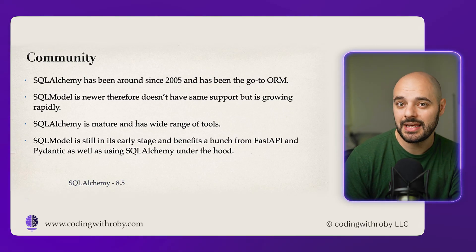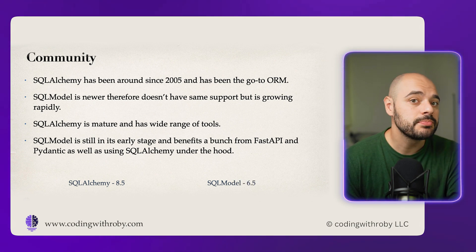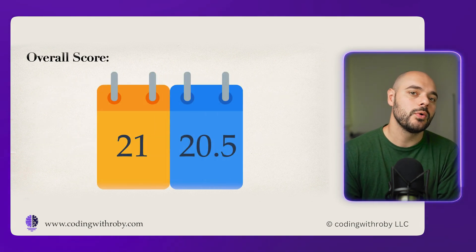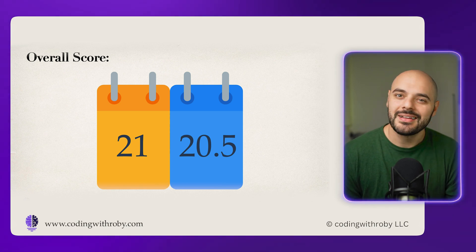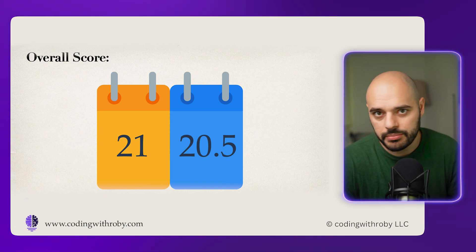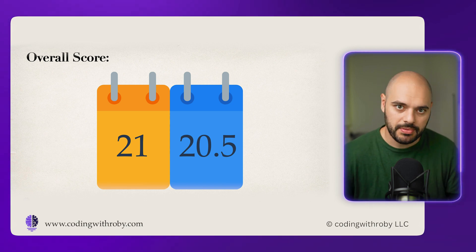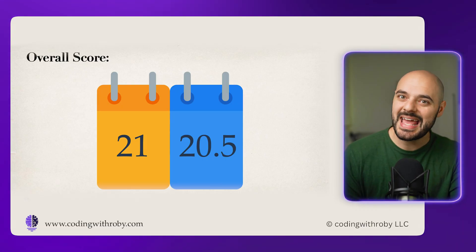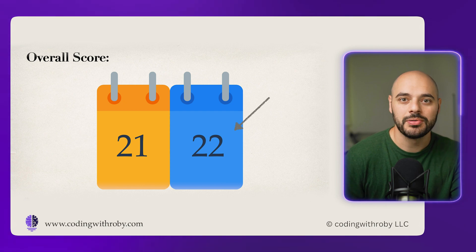Overall, when it comes to community and ecosystem, I'm giving SQLAlchemy an 8.5 out of 10 and SQLModel a 6.5. This brings the overall score to SQLAlchemy 21 and SQLModel 20.5. In the end, SQLAlchemy has a small edge, largely due to community and being proven in production — SQLModel just isn't being used in production applications enough yet. However, if you're developing a project with FastAPI, I'd give a slight edge to SQLModel, maybe 1.5 bonus points, putting SQLModel at roughly 22 to 21 overall. As of right now, I'm still probably not going to use SQLModel in production until it's proven to be a little more stable and more widely used. They're almost identical — you can use whichever you want.